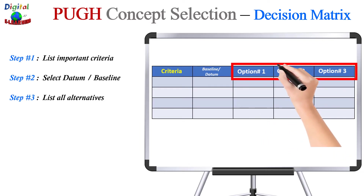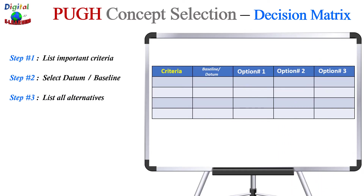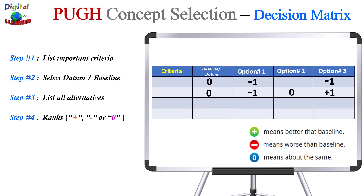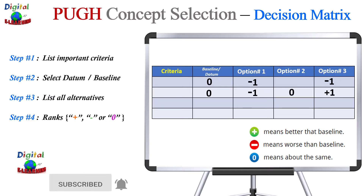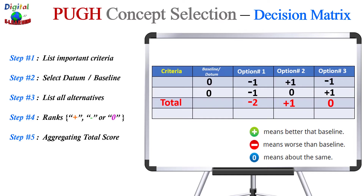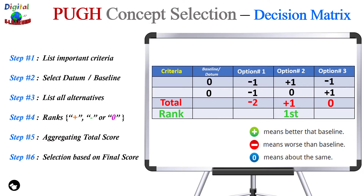Next, list all your alternatives in the horizontal column — all the options and solutions you want to compare against your baseline datum. Now rank all these options against the baseline: plus means it is better than the baseline, minus means it is worse than the baseline, and zero means it is the same. Then calculate the aggregate total — for example, option one getting minus one and minus one aggregates to minus two; option two with plus one and zero aggregates to plus one. Finally, assign a rank based on the final totals, so option two with the highest total of plus one receives rank one.